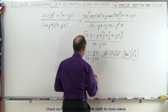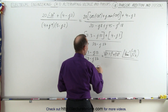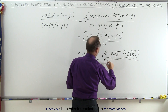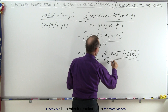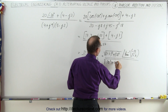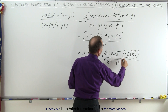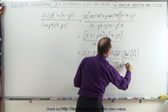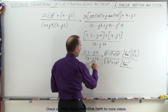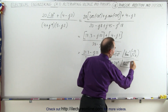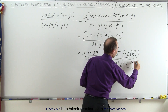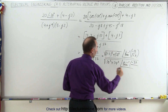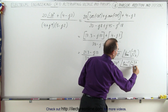We do the same for the denominator. For the magnitude, that's the square root of 38 squared plus 37 squared. And the phase angle is going to be the inverse tangent of the imaginary part, which is minus 37, divided by the real part, which is 38.